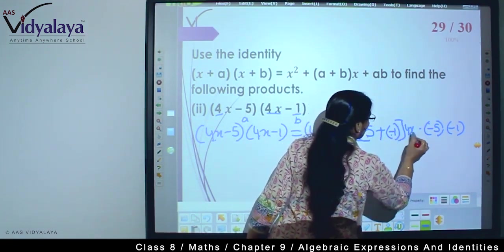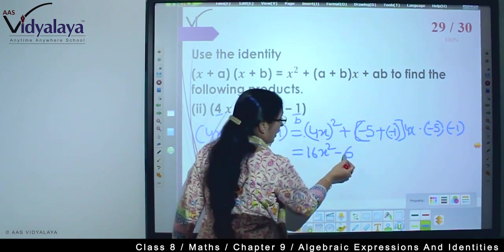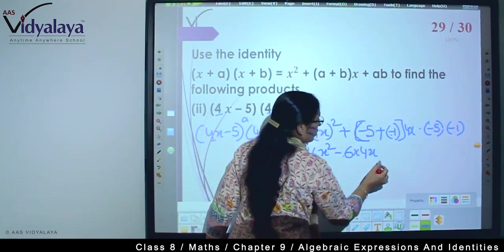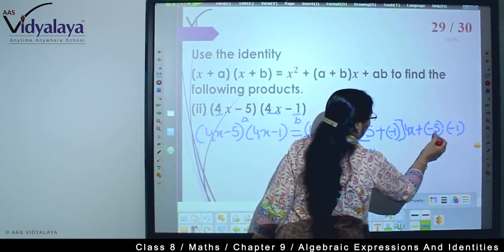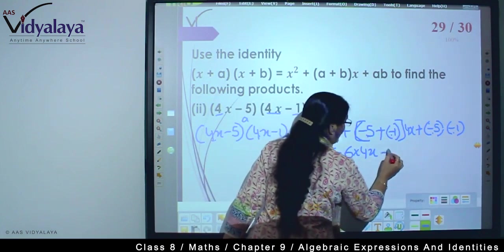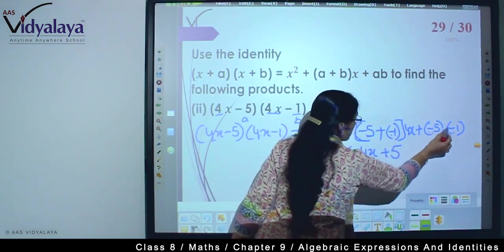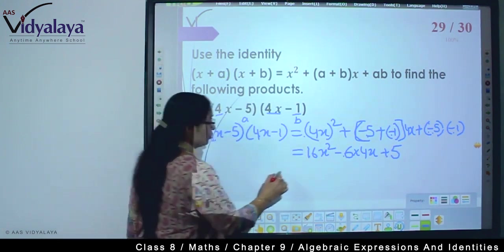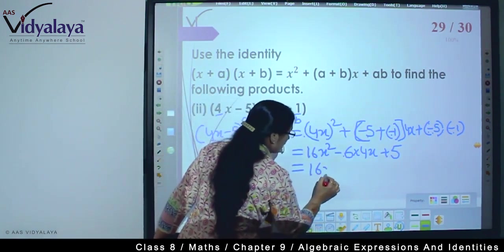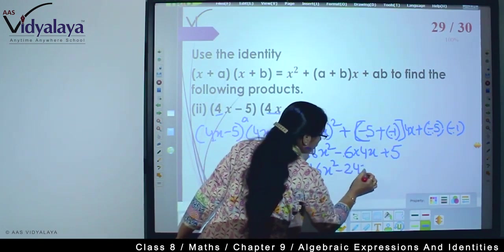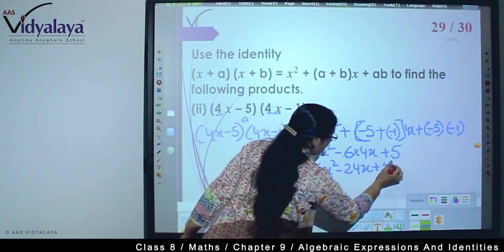But we missed one part - we have not written the common thing. Here comes 4x. So we missed writing it. So this -1, and then 4x. So our -6 times 4x. And -5 times -1 becomes plus 5 because minus times minus is plus. So the final answer is 16x² - six fours are 24 - minus 24x plus 5.